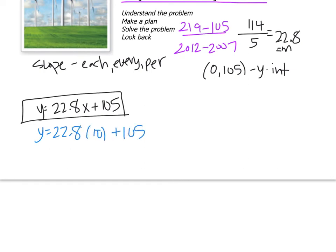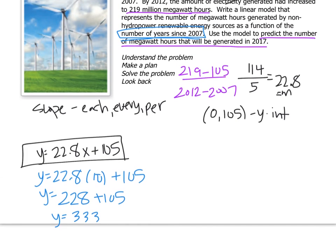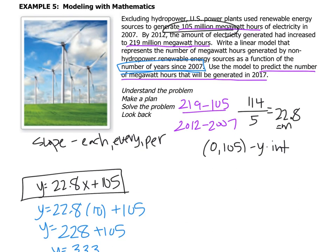So y equals 22.8 times 10 plus 105. I'm going to get my calculator powered up. I don't need to do 22.8 times 10 in a calculator. That's just 228. You move the decimal plus 105. You can do that in your head or you can get a calculator. 228 plus 105 is 333. So there would be 333 million, is that the label? Million megawatt hours.